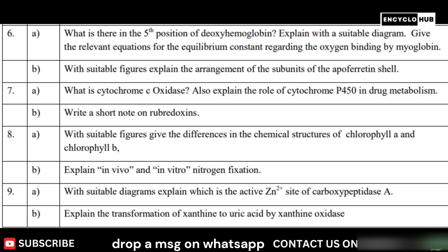Give a brief account on the toxic effects of metals. Write a short note on rubroxins. With suitable figures, give the differences in the chemical structures of chlorophyll A and chlorophyll B.